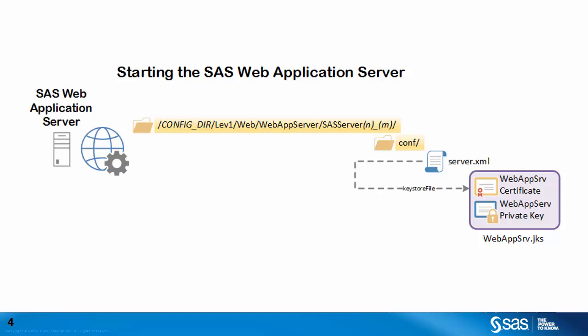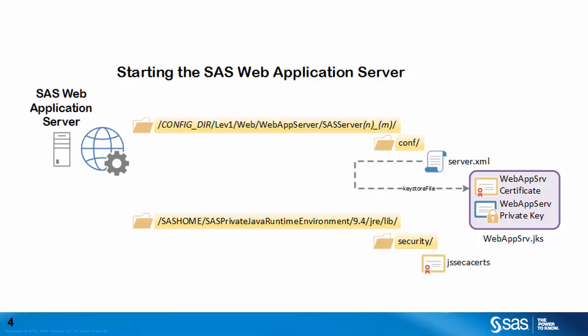If we have multiple SAS web application server instances running on the same host, then the same certificate and private key can be used for all instances. In addition, since the SAS web application server is a Java process, it runs inside the SAS private Java runtime environment, which is installed under the SAS home location. Within the SAS private JRE installation is a security subdirectory. Inside the security subdirectory is the default trust store used by the SAS private JRE. Remember, the content in this trust store is managed with the SAS deployment manager. This completes the overview of the files that are read and consumed by the SAS web application server when it starts up.